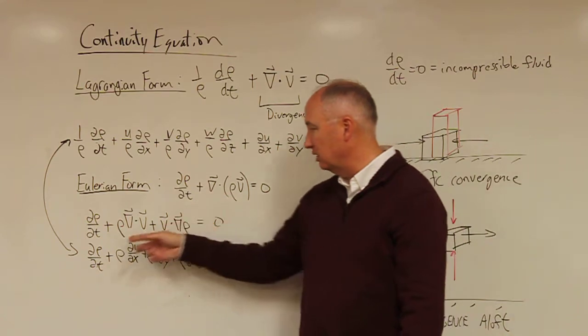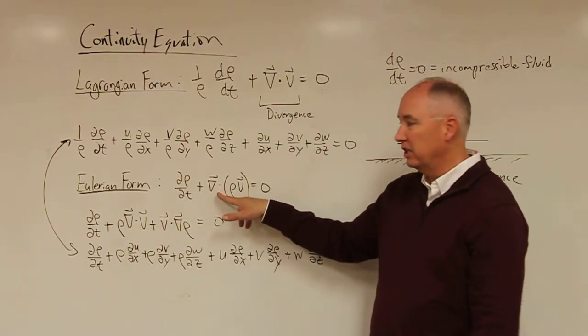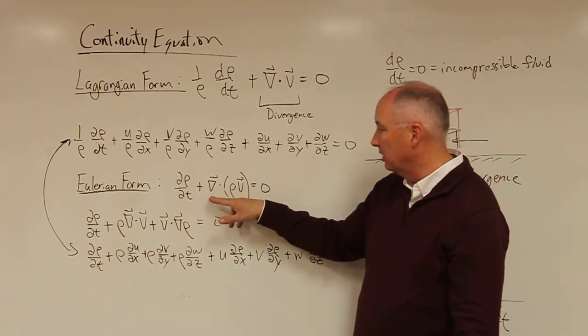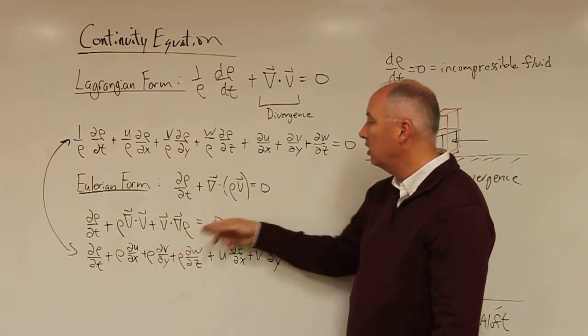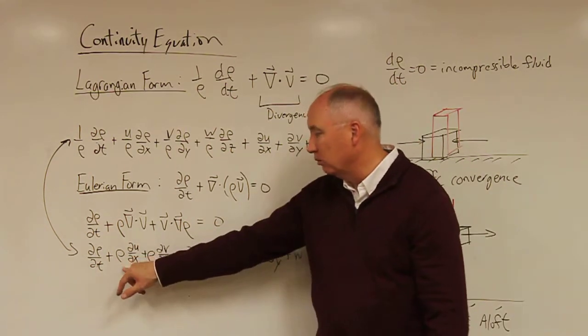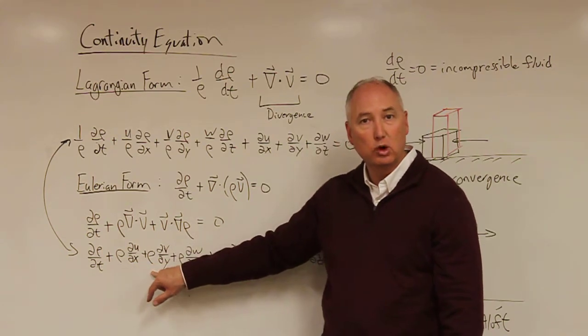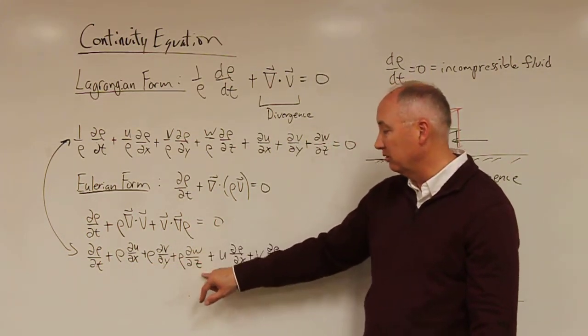So in order to do that, we have our partial derivative with respect to time of density plus, and then we have to distribute this property. So it's going to be rho del dot v plus v dot grad rho. And then we'll expand that out. You have rho partial u over partial x plus rho partial v over partial y plus rho partial w over partial z.